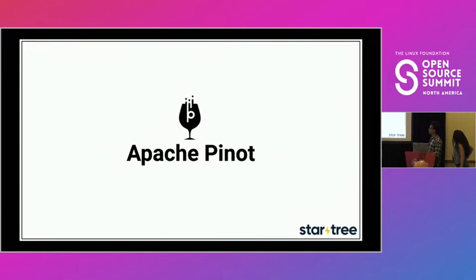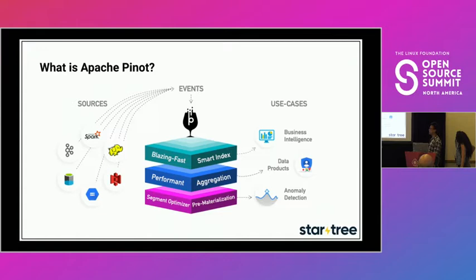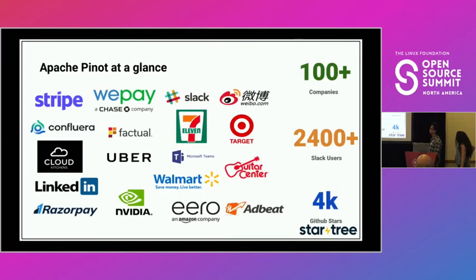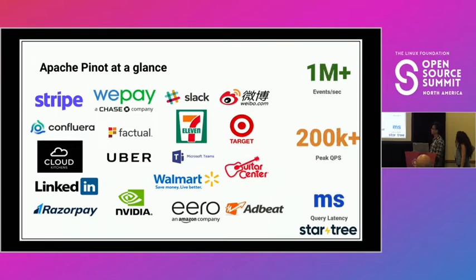So in summary, the requirement changes for modern OLAP systems are: better ingestion, better query, and better scalability. Now let's go into Apache Pinot and explain why it's the effective platform to support user-facing analytics. Pinot is a distributed columnar database built specifically for real-time analytics, including BI, data products, and anomaly detection. It ingests from streaming sources like Kafka or batch sources like Hadoop. Used by over 100 companies, the largest clusters at Stripe, Uber, and LinkedIn ingest over 1 million messages per second while serving 200,000 queries per second, maintaining P99 sub-second latency.